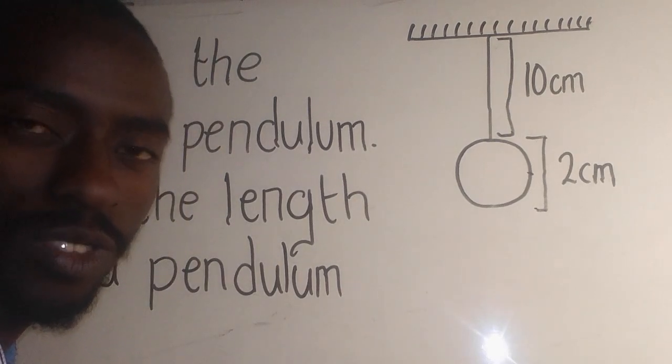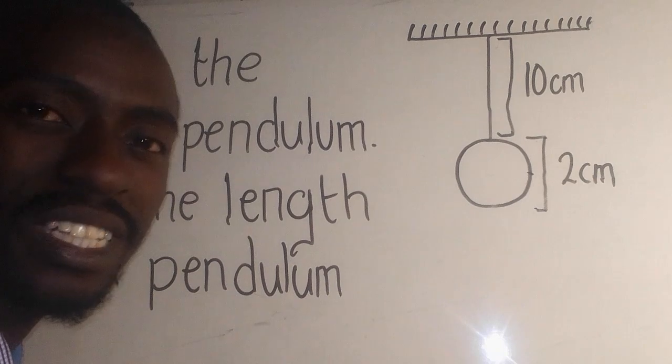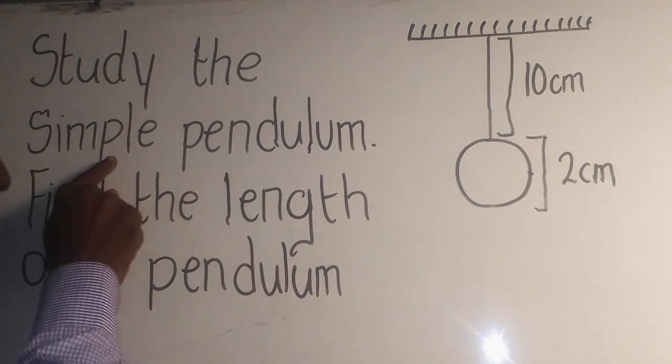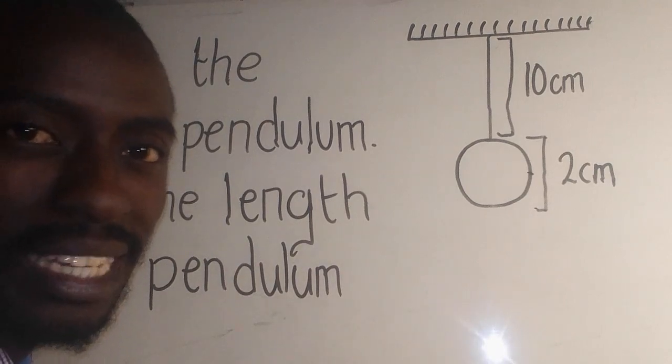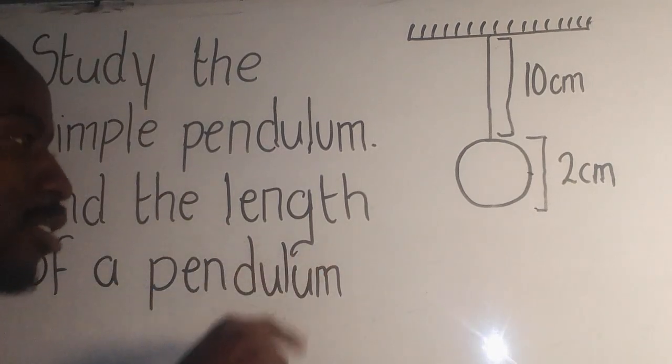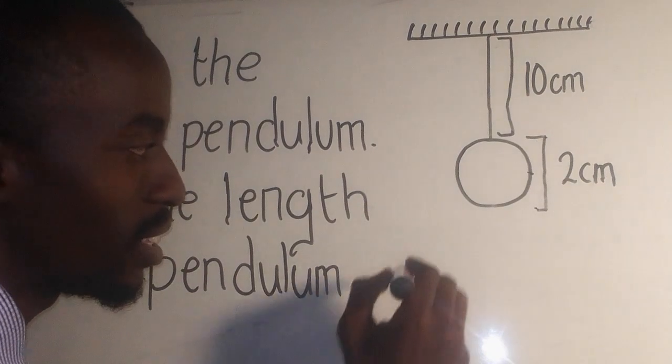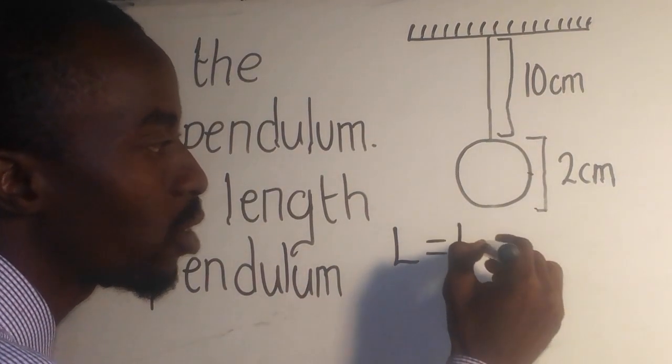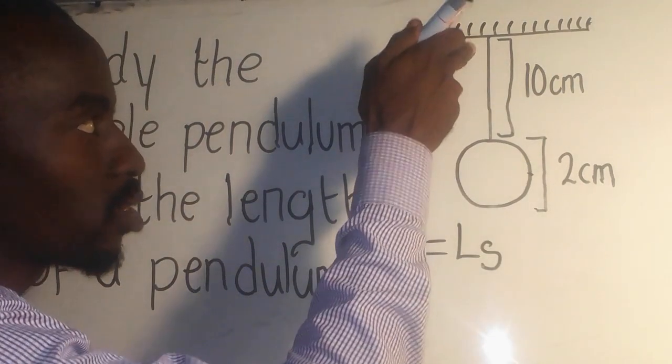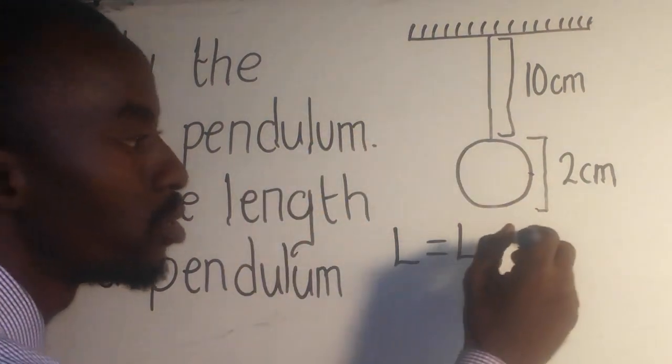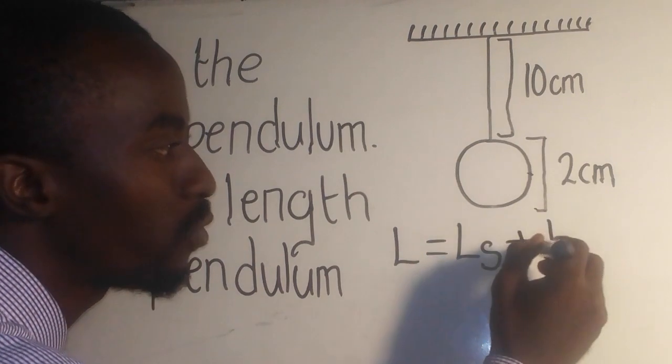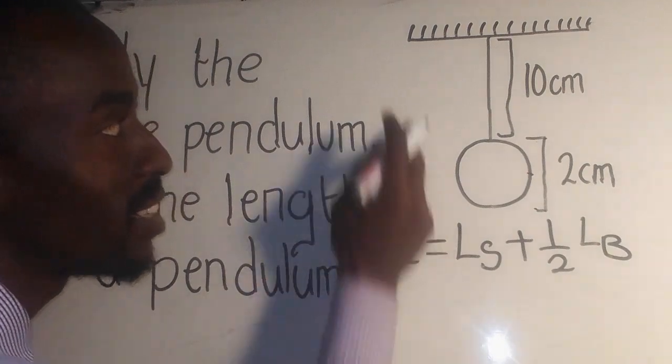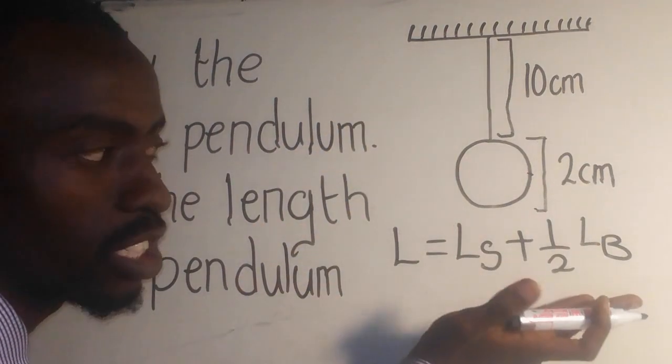In simple terms, the main purpose of a simple pendulum is to regulate the time of a clock because of the fixed interval of each periodic motion. When they say simple, it simply means you can easily set it up. Now, to find the length of the pendulum, it is given by this: L equals the length of the string up to here, plus half of the length of the bulb.